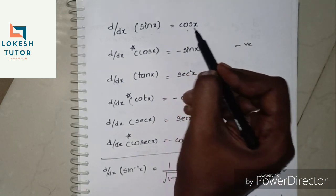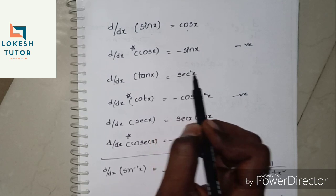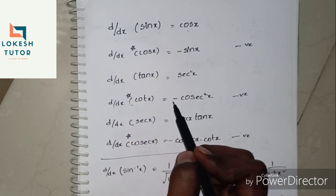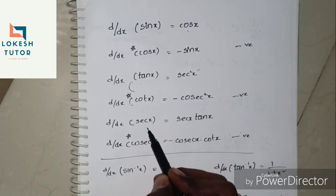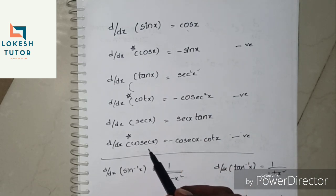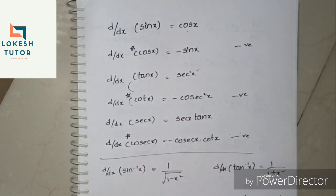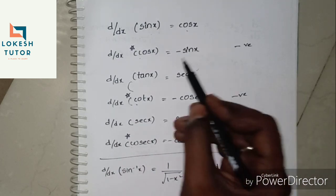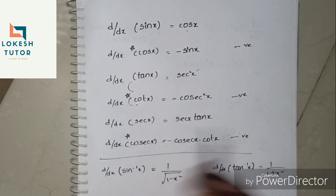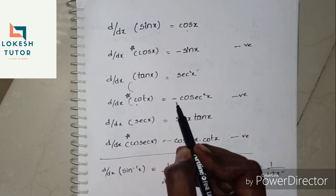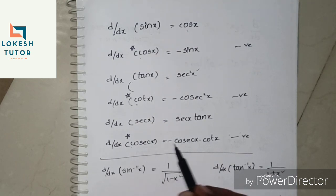To group these: sin x → cos x; cos x → minus sin x; tan x → sec²x; cot x → minus cosec²x; sec x → sec x tan x; cosec x → minus cosec x cot x. Notice that cos x, cot x, and cosec x all have a negative sign — those are the ones starting with 'co'.